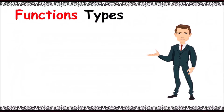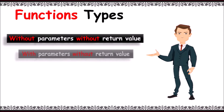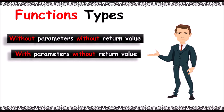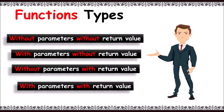Function types fall into four types with respect to parameters and return value: without parameters and without return value; with parameters, without return value; without parameters, with return value; and with parameters, with return value.